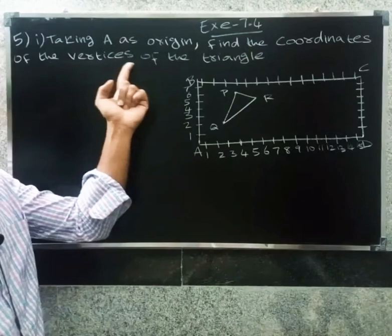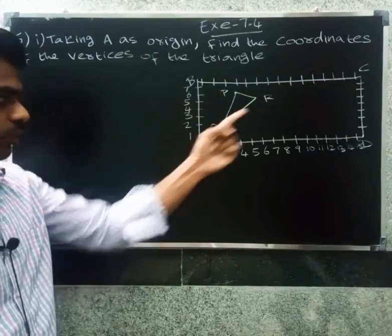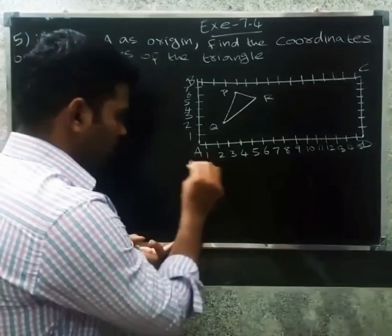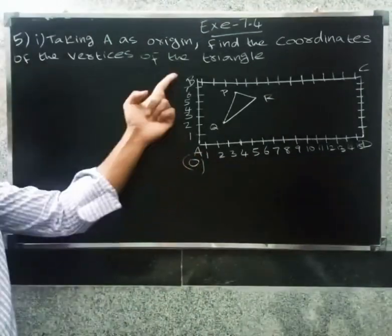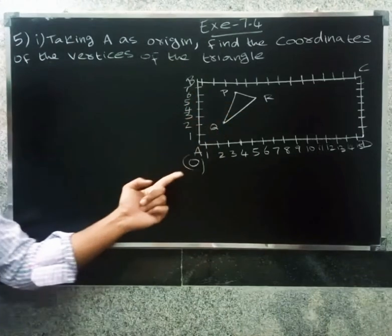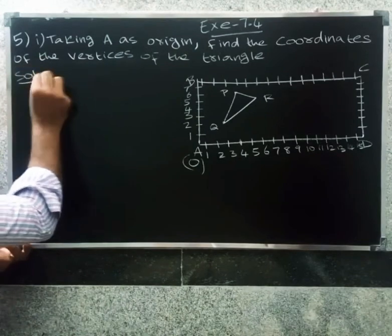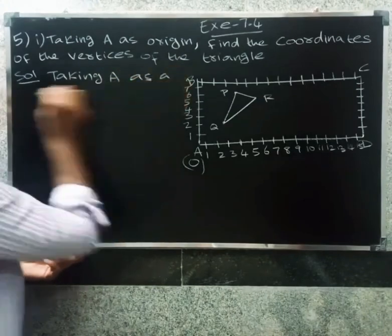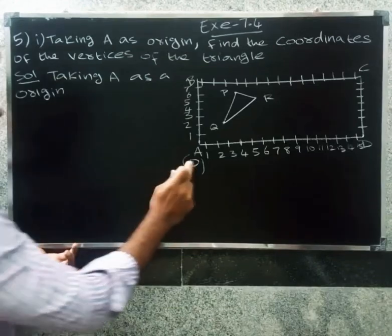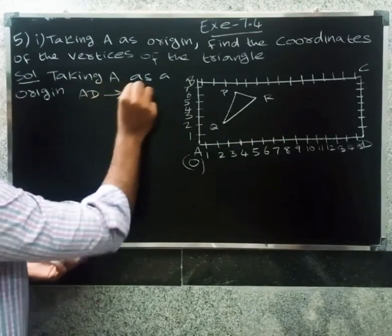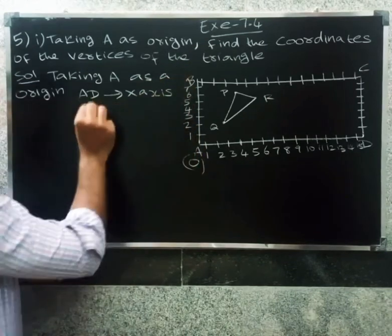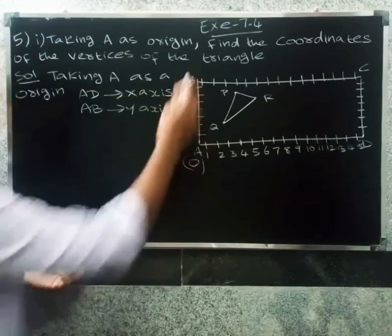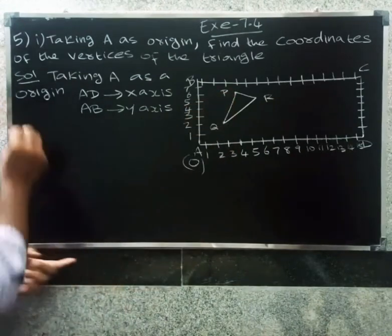What we have here is A as the origin. Taking A as the origin, AD is along the x-axis and AB is along the y-axis. So AD on the x-axis and AB on the y-axis.